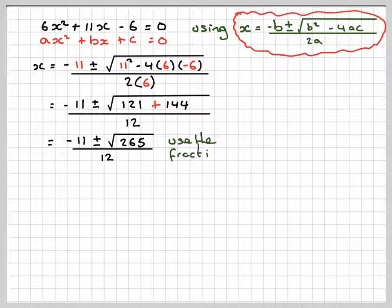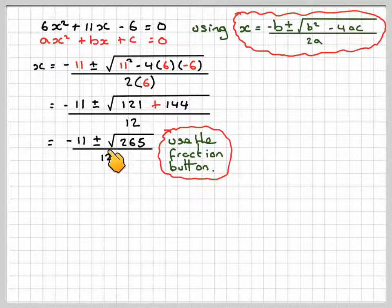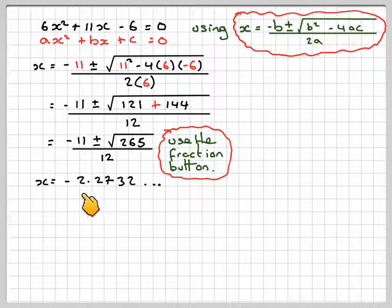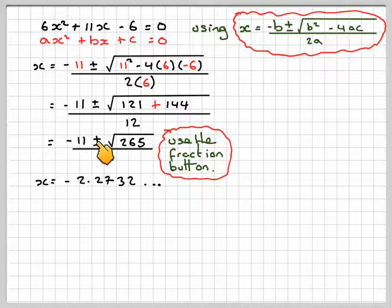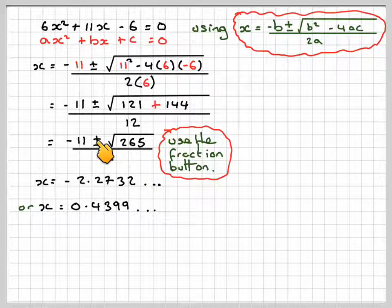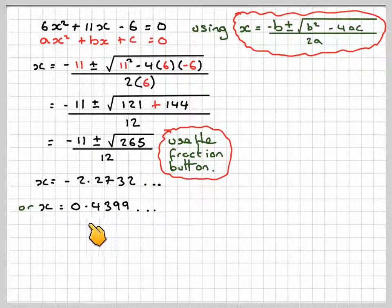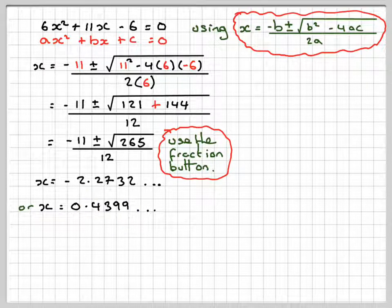Now we're going to use our calculator. Now on a calculator, we make sure we use the fraction button. So enter this using the fraction button. So we're going to get x is minus 2.2732 when we use the minus sign here. And when we use the plus, and you can just use the replay button to change the minus to a plus, we're going to get 0.4399. Don't round these off too prematurely.